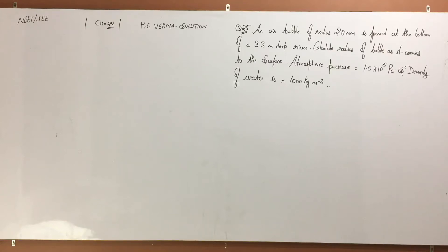Hello guys, welcome to the channel. Question number 25, chapter number 24 by S.L. Verma. An air bubble of radius 2 millimeter is formed at the bottom of a 3.3 meter deep river. Calculate the radius of the bubble as it comes to the surface. Atmospheric pressure is 10^5 Pascal and density of the water is 1000 kg per meter cube.